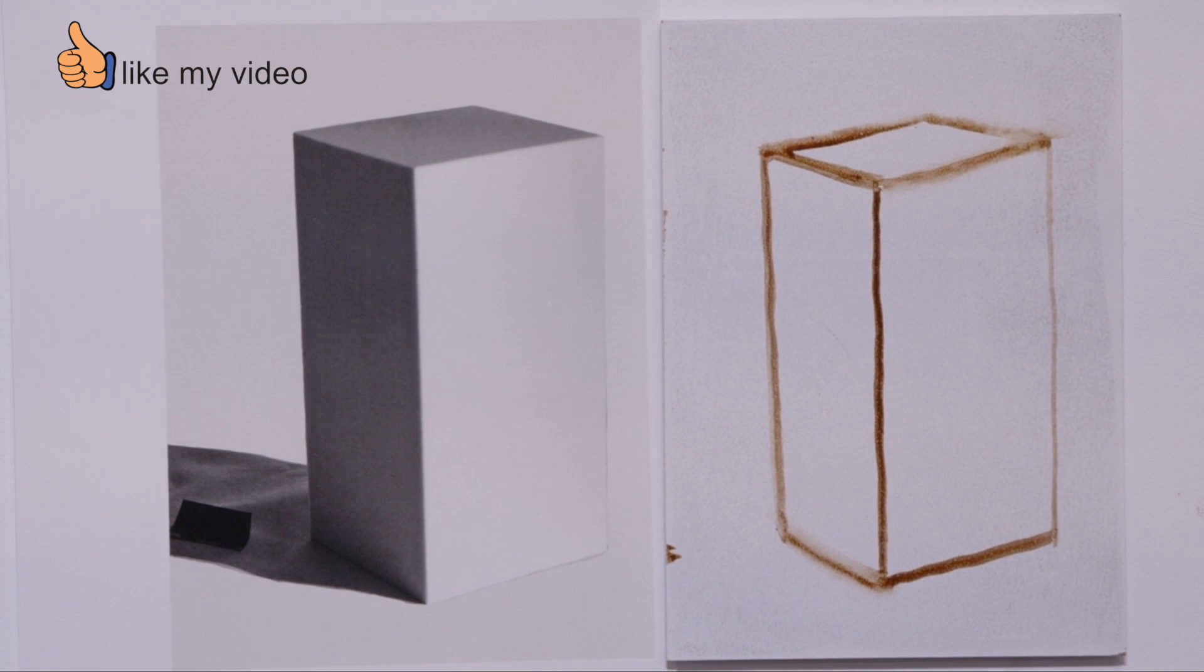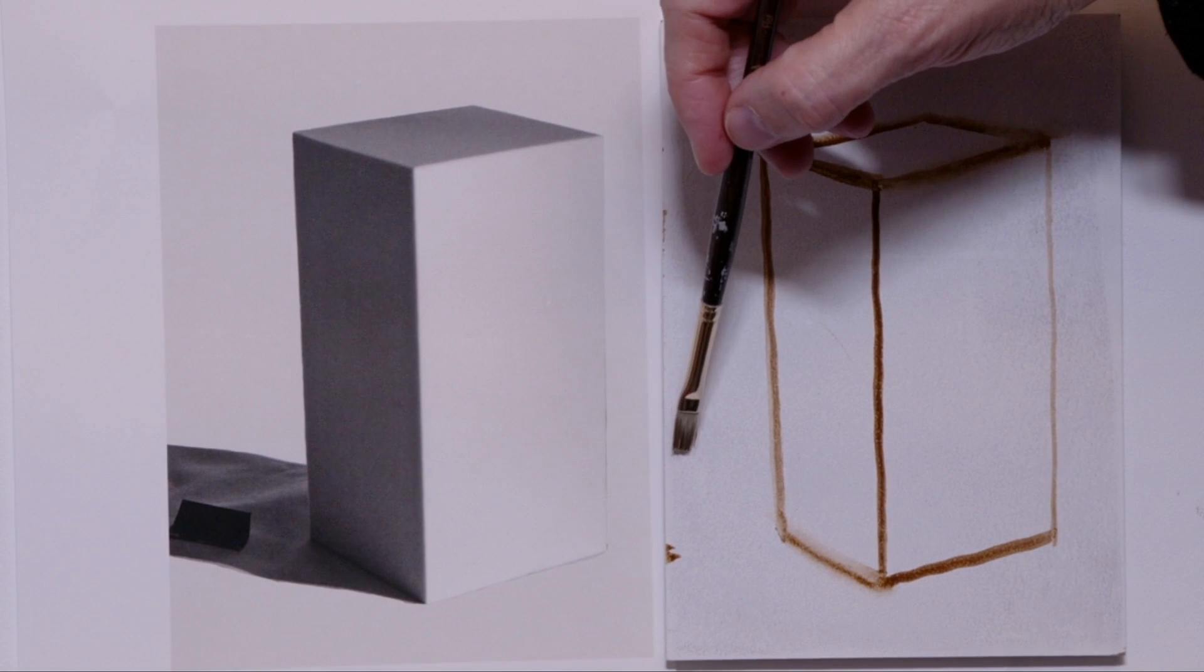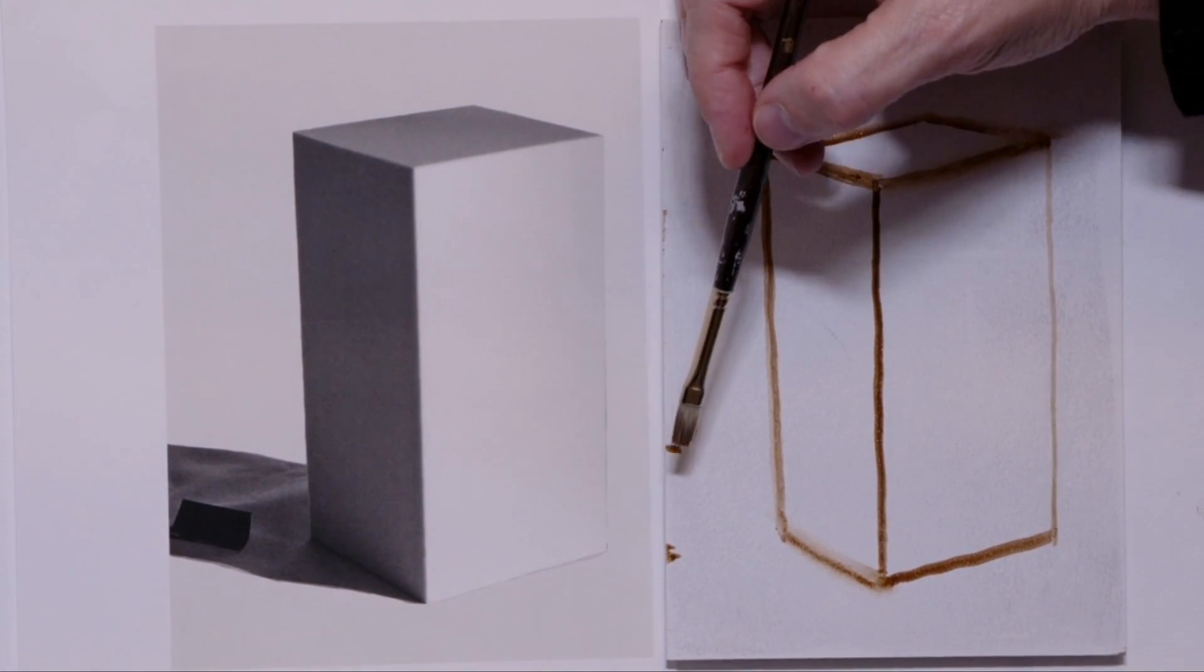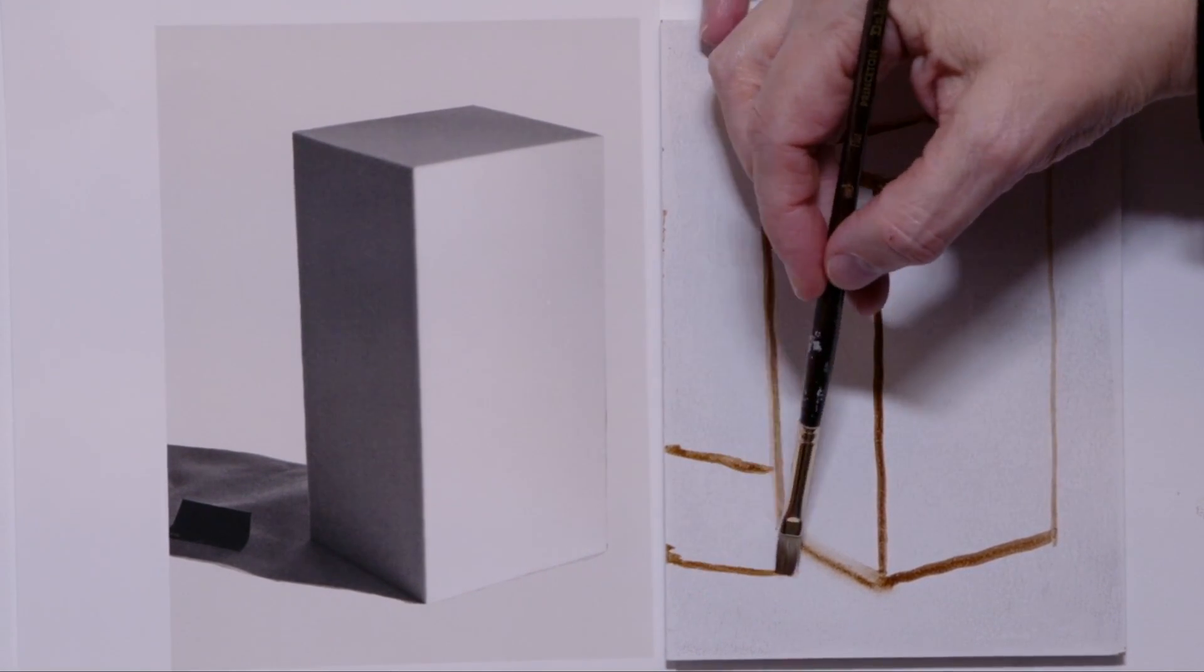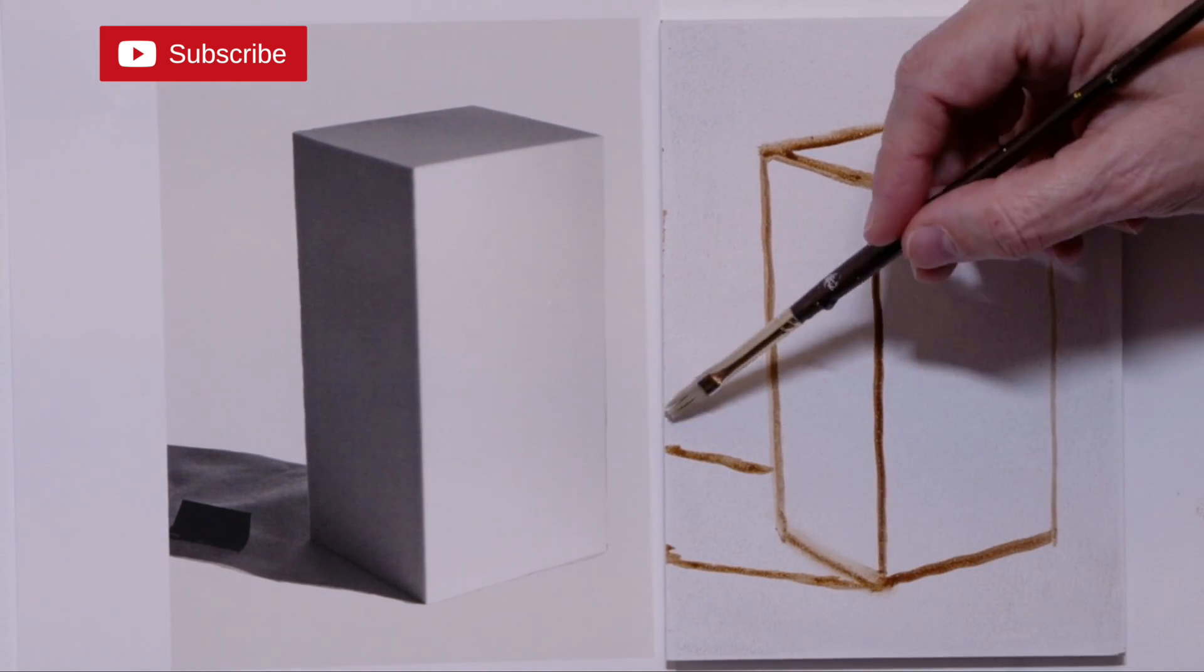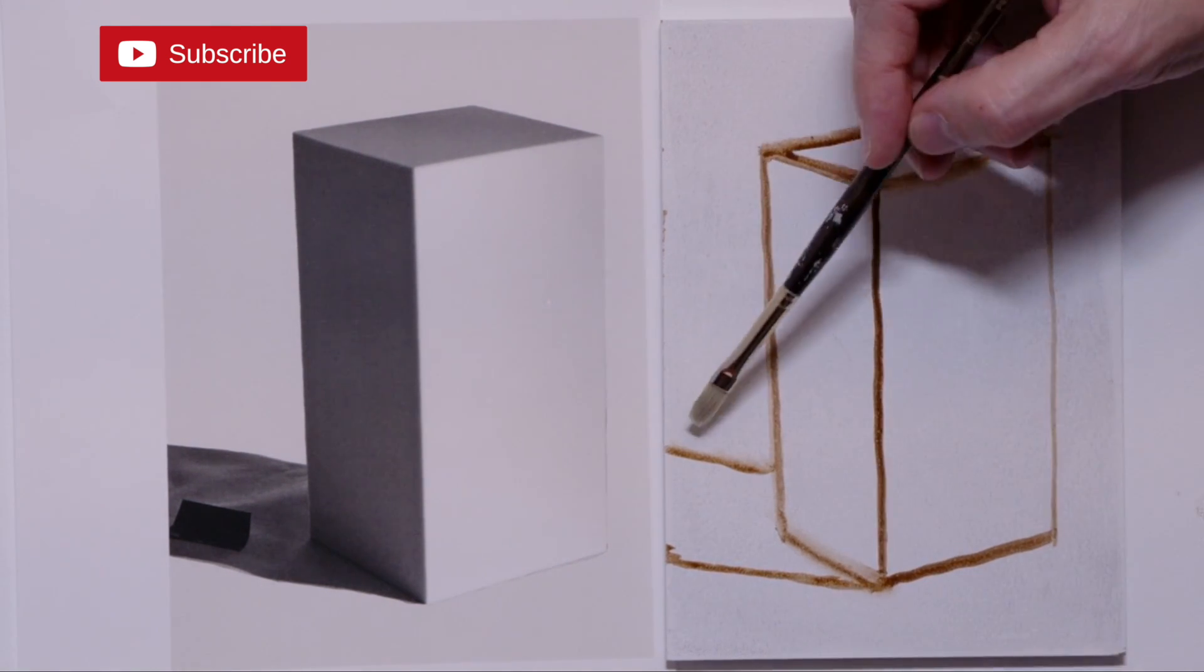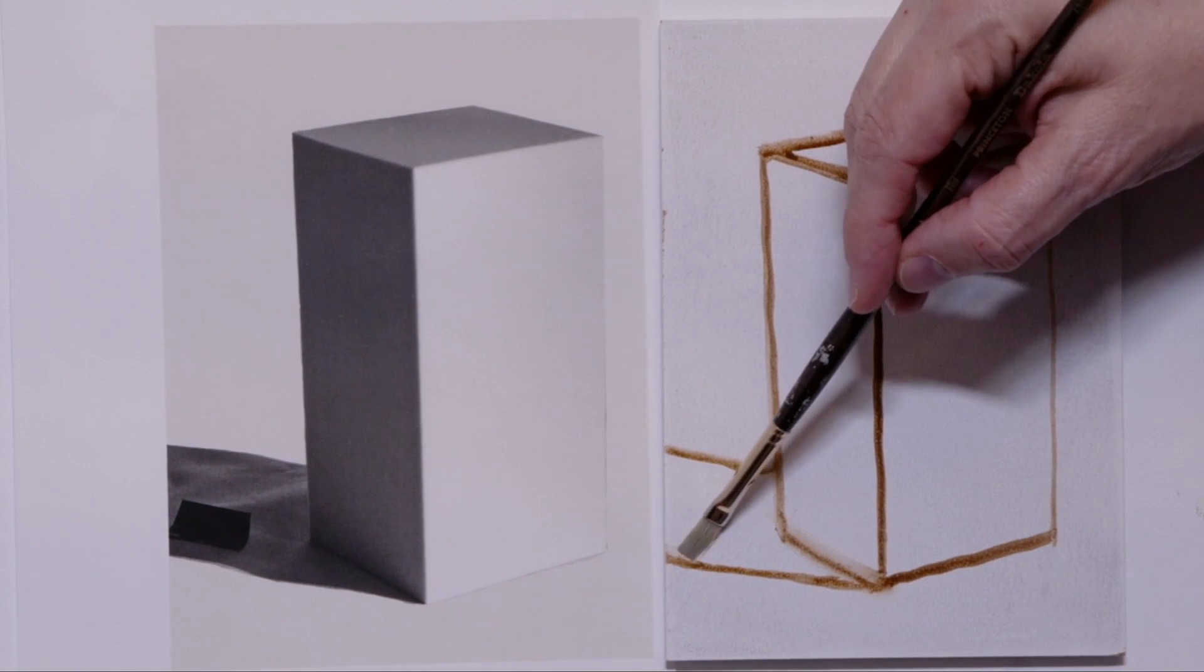This is why I paint sight size. The image next to it is exactly the same size as I'm going to paint. That is what it means to paint sight size. So now I'm drawing in the cast shadow. Tidy that up because it's a thing I do. But I'm pretty pleased with that drawing. It's not a complex drawing but it took time to do.